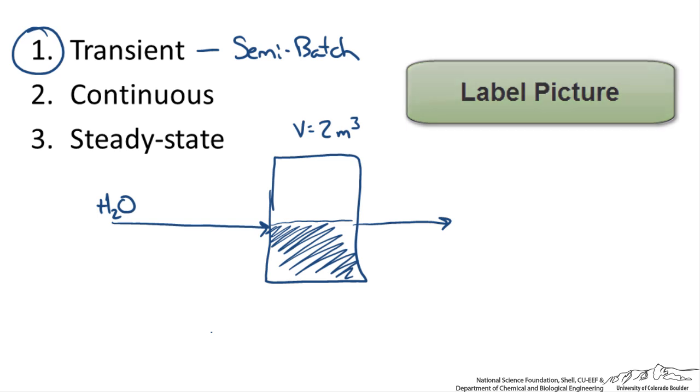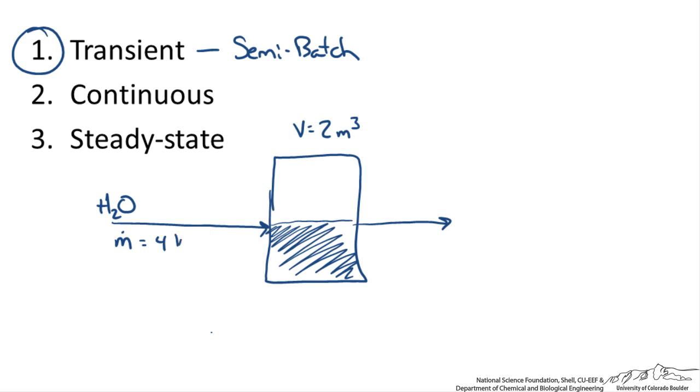We have a rate, I am going to write m with a dot for mass flow. That is going to be 4 kilograms a second. And then mass flow, and I will label this 2, and this 1 is 2 kilograms per second. So we have our diagram.